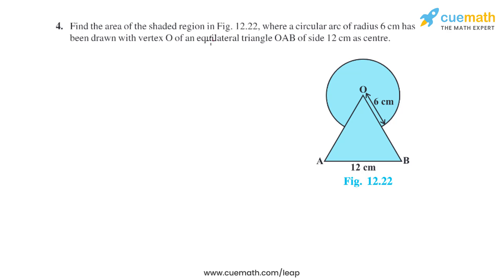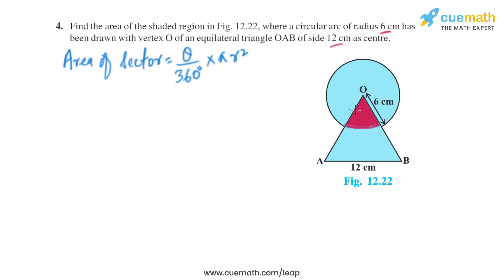Question 4 of this exercise: find the area of the shaded region in a figure where a circular arc of radius 6 centimeters has been drawn with a vertex of equilateral triangle OAB of side 12 centimeters as the center. Triangle OAB is equilateral, so we can find the area of this triangle and the area of this circle easily. However, when adding both areas, we get the sector area counted twice, so we need to subtract it.